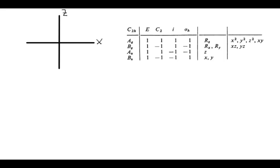We're going to imagine a px orbital. You know that a px orbital exists along the x-axis, and we're going to show that there are two different sides of the wave function. So if this p orbital exists in the C2h point group, let's consider the effect of each symmetry operation on this px orbital.